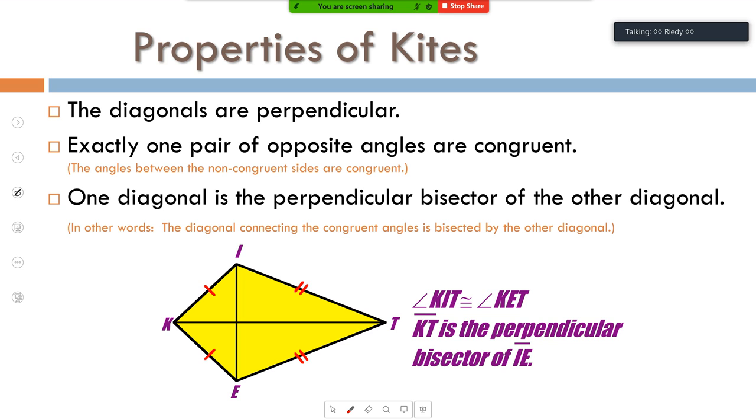The good thing about the kite is we don't do a ton of work with them. The bad thing is there's a ton of stuff to remember about them that doesn't necessarily fill in with all the other quadrilaterals. Make sure you don't get the kite, which looks like a kite, confused with a rhombus, which looks like a diamond, because they have different properties.